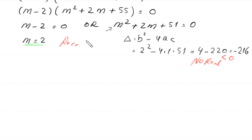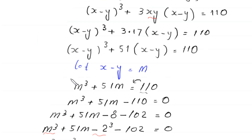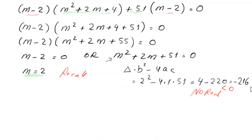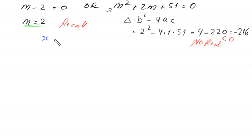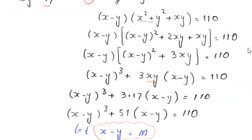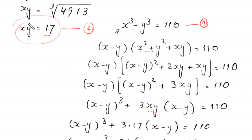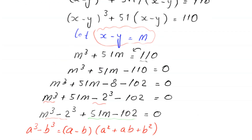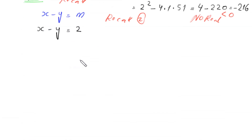Recalling that m = x − y, we have x − y = 2. And from Equation 2, xy = 17.